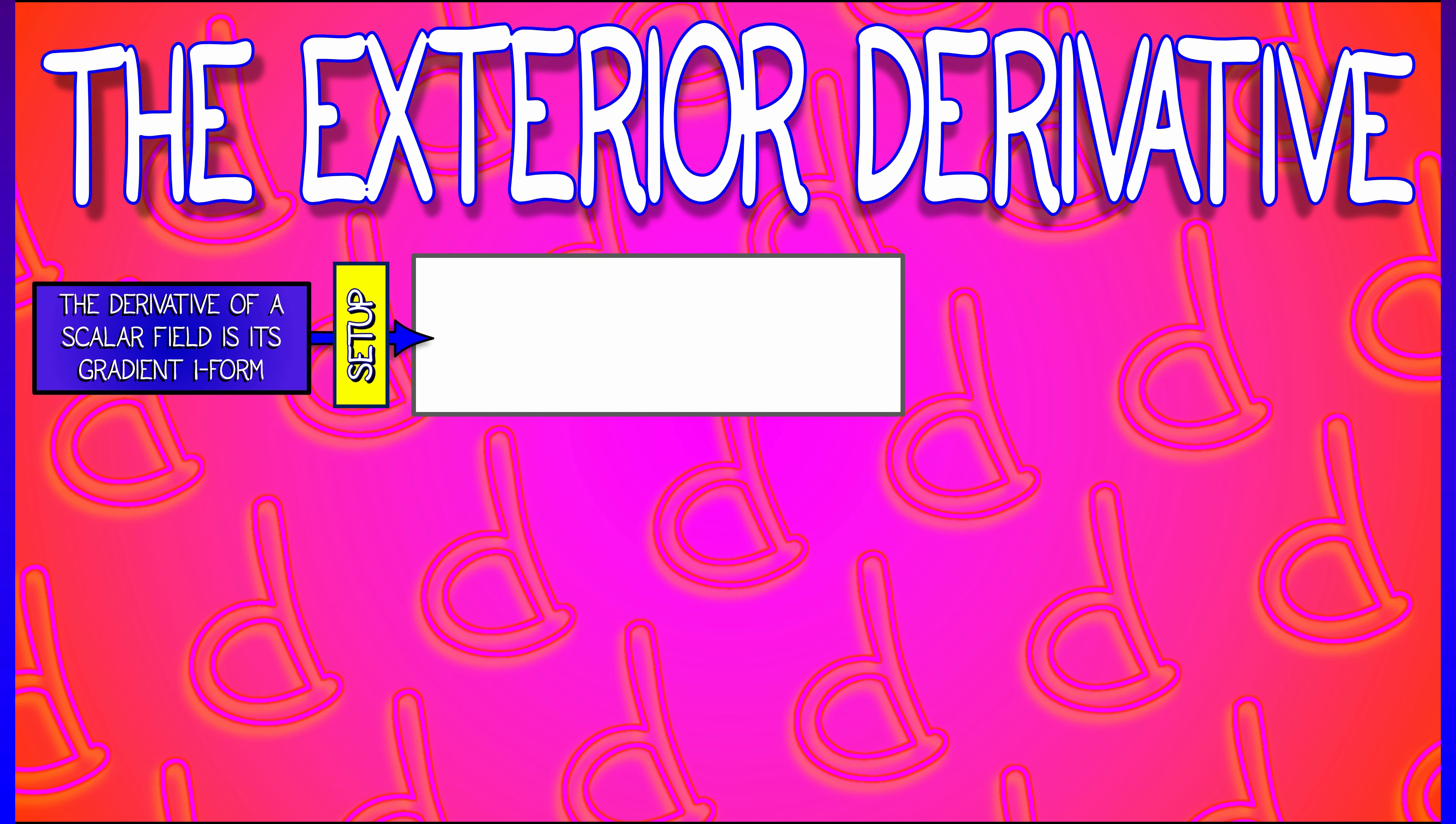Now, if we have a zero-form field f, we've already done this. Its derivative is the gradient one-form df, given by the sum i goes from 1 to n, partial f partial xi, dxi. That is simple. That we've got. Now let's keep going.